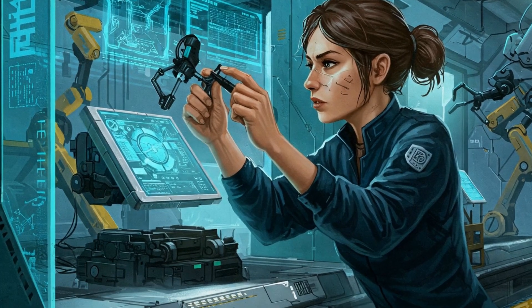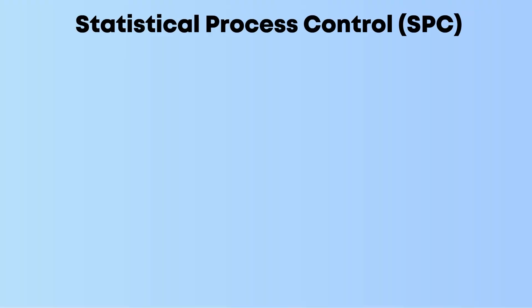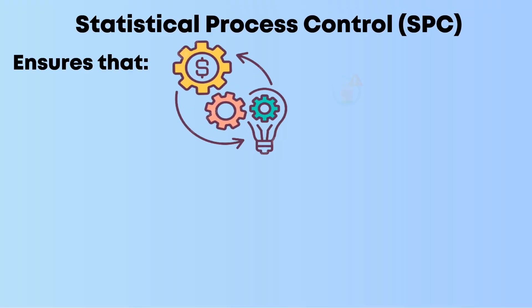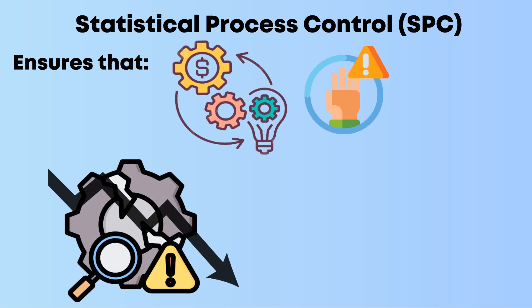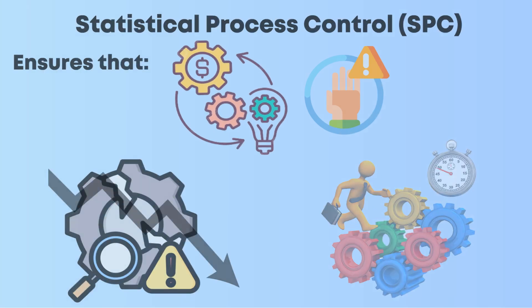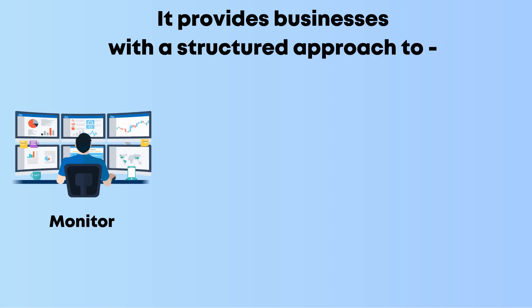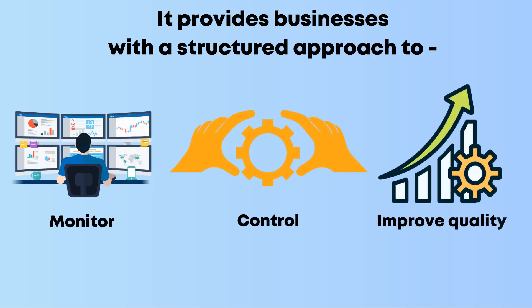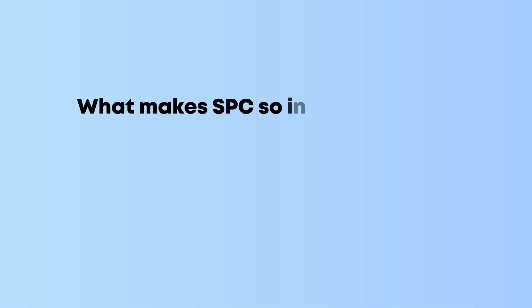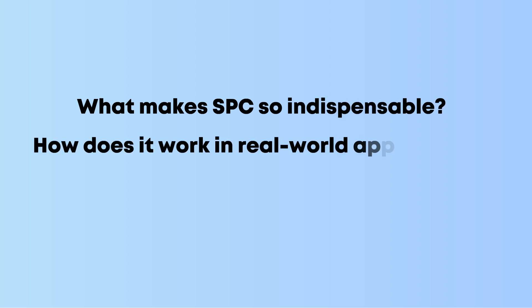In a world driven by precision, Statistical Process Control, or SPC, ensures that processes stay within acceptable limits, minimizing defects and maximizing productivity. It provides businesses with a structured approach to monitor, control, and improve quality. But what makes SPC so indispensable, and how does it work in real-world applications? Let's explore this powerful tool in detail.